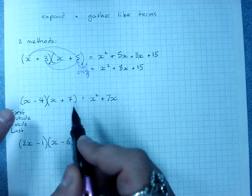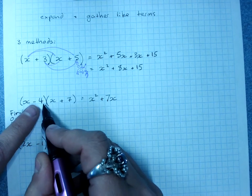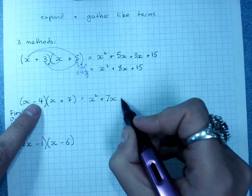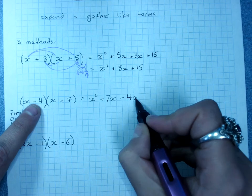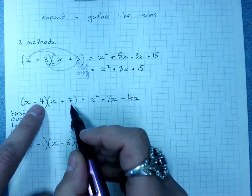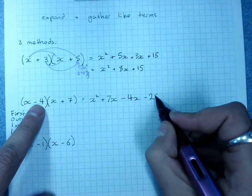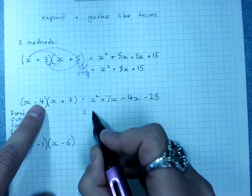Multiply the two inside terms together. Negative 4 times x, minus 4x. And the two last terms, negative 4 times 7, minus 28.